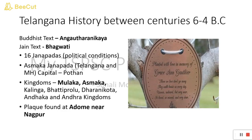The Asmaka Janapada was the kingdom which flourished for the very first time, and that's why we give it more importance. The capital of this Janapada was Potan. Where is Potan? Basically, Potan is today's Bodhan region, which is in Nizamabad. It is currently termed Bodhan.